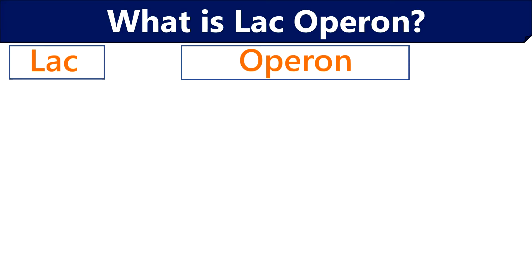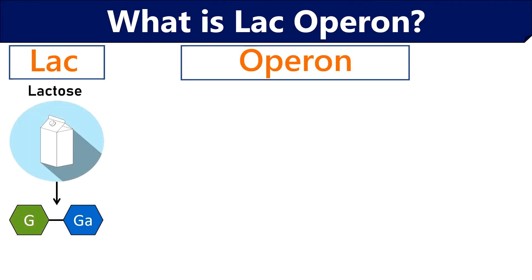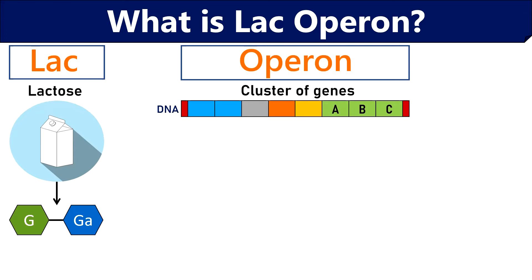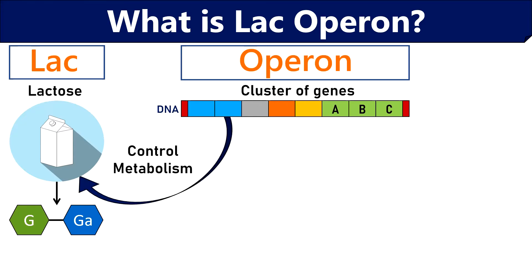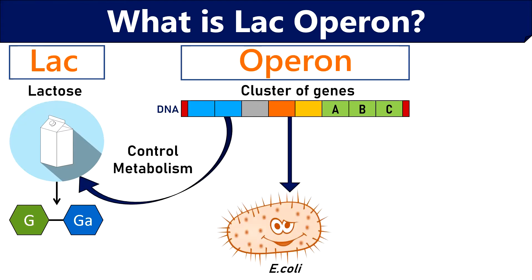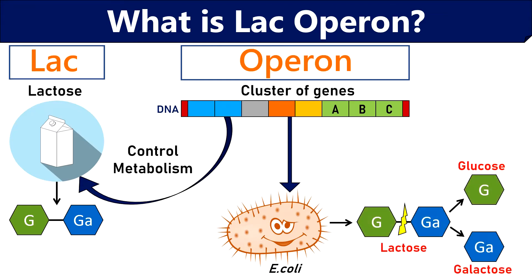Now let us take a quick overview on the meaning of lac operon. In the term lac operon, lac stands for lactose, which is a disaccharide sugar naturally found in milk and it is composed of glucose and galactose subunits. Then operon is the cluster of genes in the DNA segment which regulate or control the metabolism of lactose. E. coli uses the lac operon system for the transport and metabolism of lactose. The lac operon contains genes that can break down lactose into simpler units like glucose and galactose that the cells can utilize easily. It is also important to know that the lac operon is expressed only when lactose is present and glucose is absent.